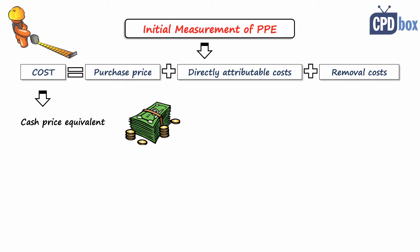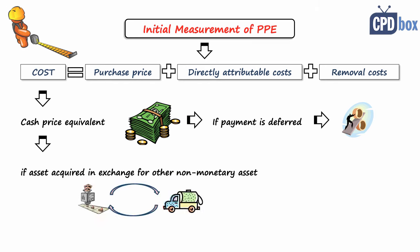is the cash price equivalent at the recognition date. So if the payment for the asset is postponed to a later date, this amount shall be discounted and the difference between the future payment and cash price equivalent is the interest. If an item is acquired in exchange for other non-monetary assets, then it shall be initially measured at fair value.